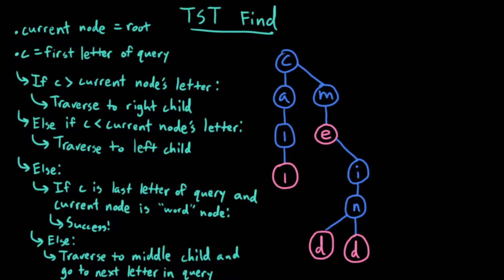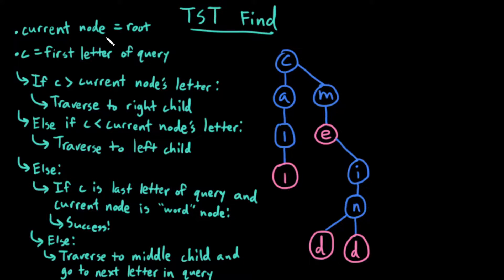Let's take a look at the ternary search tree find algorithm. I've written it over here, and I'll also work through it with a few examples on this specific ternary search tree. In general, this algorithm is describing the successful cases, so if any of these things that I try to do is not possible — for example, if I try to traverse to a given node but that node does not exist — I fail. The word that I'm looking for does not exist in the ternary search tree.